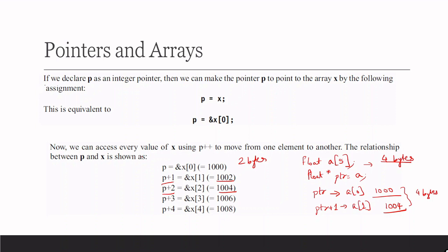You can identify the relation as: base address of the array plus size of each element multiplied by the index. For example, 1000 is the base address, integer size is 2 bytes, so 2 into 4 gives 1008. This formula — base address plus size of each element times index — applies for any type: int is 2 bytes, float is 4 bytes, and on a Pentium processor int is also 4 bytes.